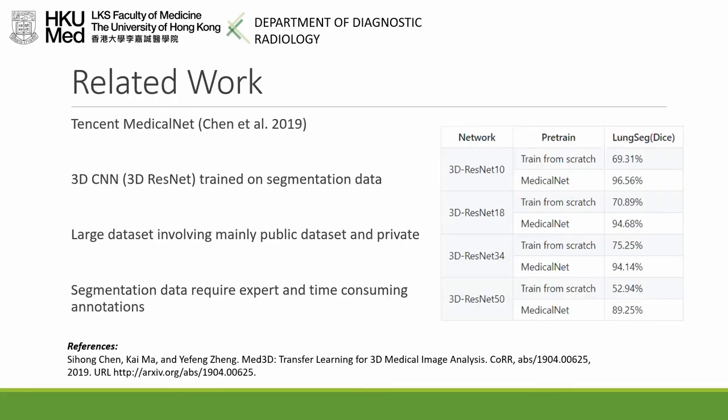One related work is MedicalNet by Chen from Tencent, where they have curated a wide range of volumetric images with segmentation labels and trained a 3D CNN backbone that can be used for transfer learning. They have shown that it can significantly improve performances on other related medical imaging tasks. However, given their networks require segmentation labels, this may not be scalable to large datasets, as the time to label multiple slices of the scan could be costly.